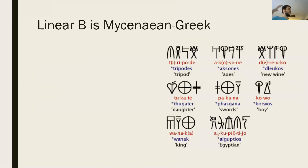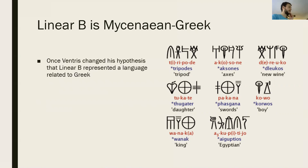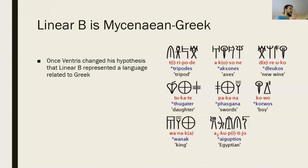Once Ventris changed his assumption — that Linear B represents an ancestor of the Greek language rather than Etruscan — things started to make much more sense. We can also notice that some acrophonic principles are being used. For example, the word 'tripod' is represented by its syllables, and the first symbol for tripod is actually a picture of a thing with three legs, exactly like a tripod. So the acrophonic principle is being used here.